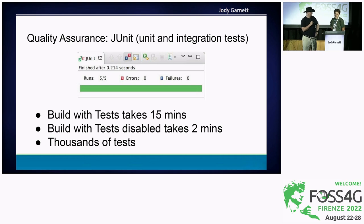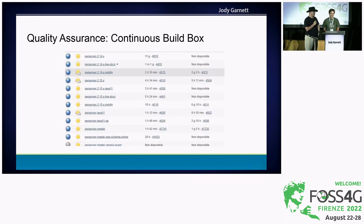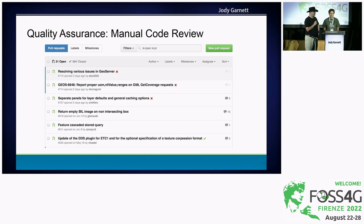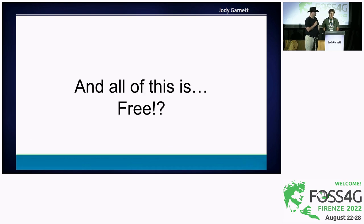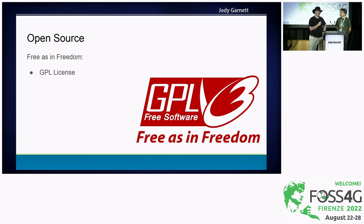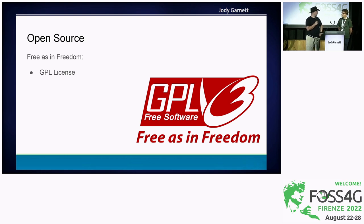In terms of reliability, we have invested a lot in quality assurance with unit tests to the point that running the tests takes the vast majority of the build time. We have a continuous build box, GitHub Actions for pull requests, and every pull request is manually code reviewed. And yes, all of this that we talked about is free — it really is — and that's actually a real feature of GeoServer. We are open source, free as in freedom, GPL licensed. Being freely available really is a superpower of GeoServer. It's why we're all here.